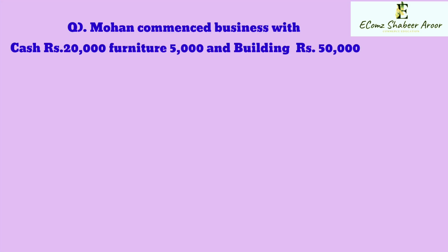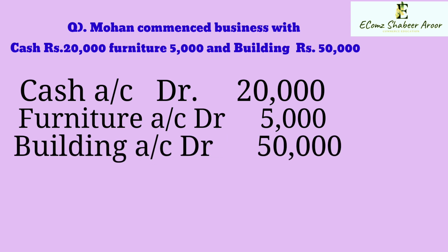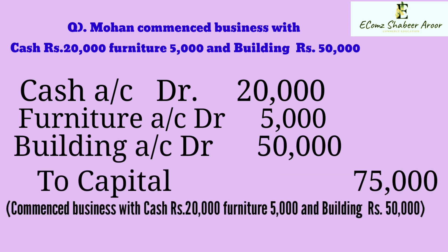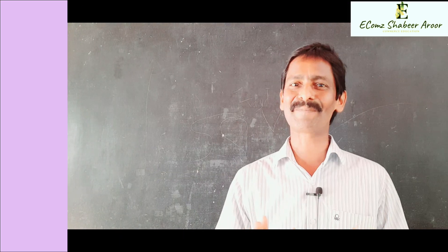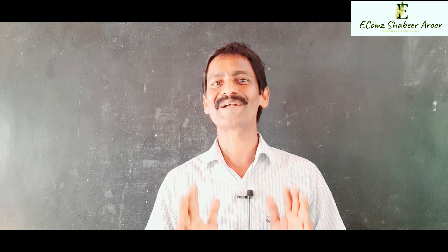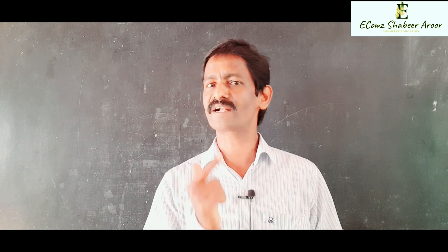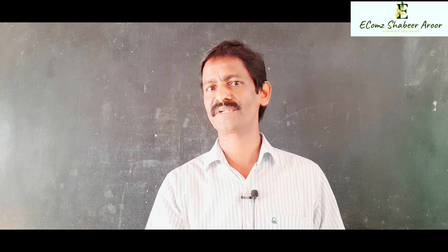Here is a question: Mohan commenced business with cash 20,000, furniture 5,000, and building 50,000. In this case, the debits are cash, furniture, and building, and capital is credited. This is the compound journal entry. A compound journal entry is an entry having more than one debit or more than one credit.